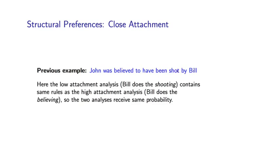This close attachment preference becomes even more pronounced if we look at examples involving attachments to verbs. And this is actually an example sentence which I had shown you earlier in the class. So the ambiguity here is that the prepositional phrase by Bill can either attach to shot, this is the close attachment, or it can attach to believed. So in the shot interpretation, Bill is doing the shooting. In the believed interpretation, Bill believes that John has been shot.